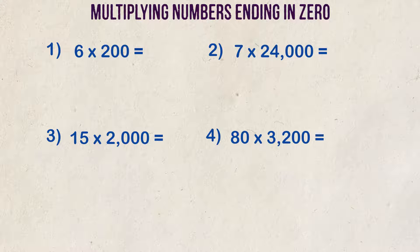Example 1: 6 times 200. This is an easy example to start with. Let's look at the numbers that are not zeros. If we were to multiply 6 times 2, we would get 12. There are two additional zeros on that number of 200. And if we add those zeros at the end of 12, we would get 1,200. 6 times 200 is 1,200.